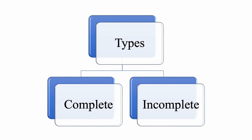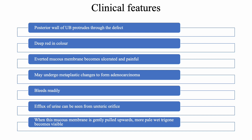The clinical features include: the posterior wall of the urinary bladder protrudes through the defect, because the anterior wall of the bladder along with the skeletal and musculature of the anterior abdominal wall is not formed. The posterior wall is seen in deep red color. The inverted mucous membrane becomes ulcerated and painful, may undergo metaplastic changes to form adenocarcinoma, and bleeds readily. Efflux of urine can be seen from the ureteric orifice, and when the mucous membrane is gently pulled upwards, the more pale, white trigone becomes visible.